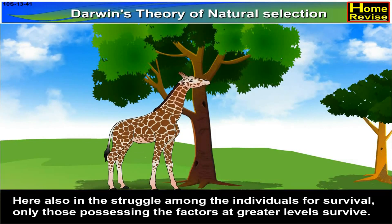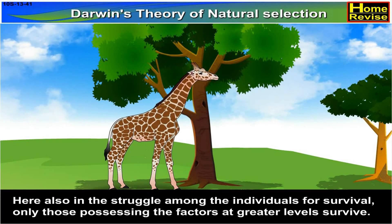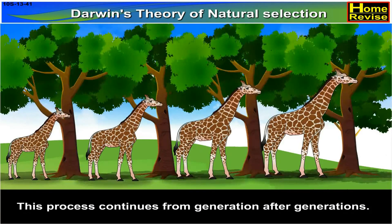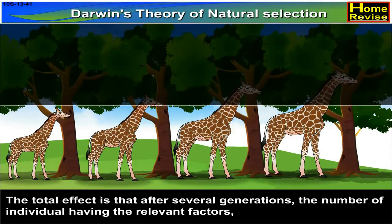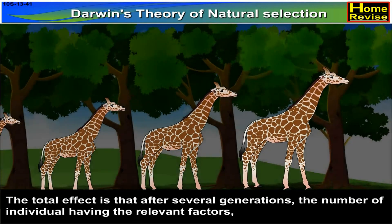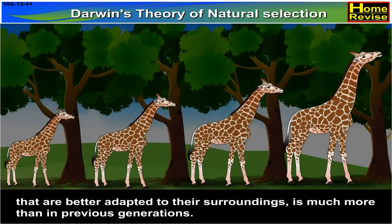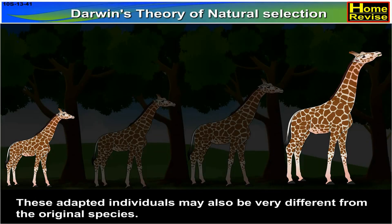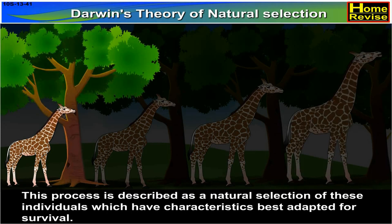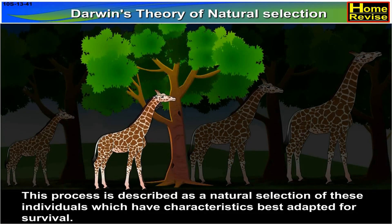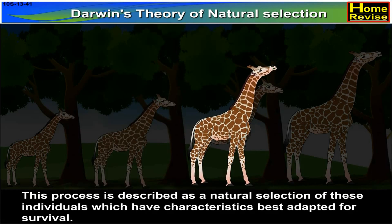Here also, in the struggle among individuals for survival, only those possessing the factors at greater levels survive. The total effect is that, after several generations, the number of individuals having the relevant factors that are better adapted to their surroundings is much greater than in previous generations. These adapted individuals may also be very different from the original species. This process is described as a natural selection of individuals which have characteristics best adapted for survival.